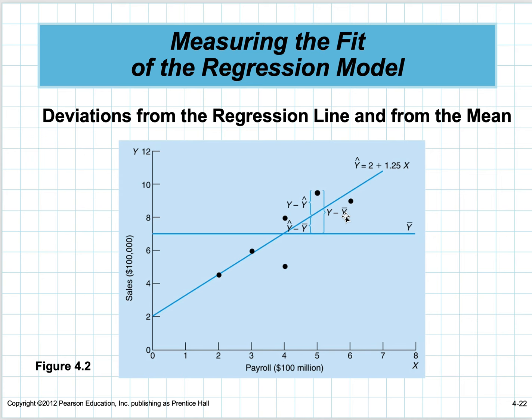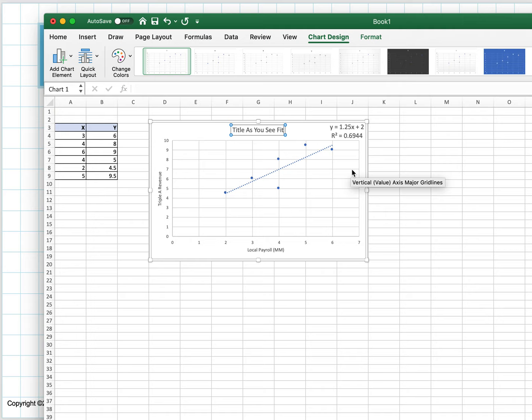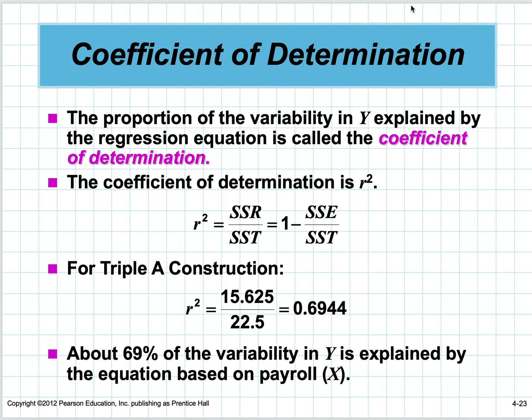We come up with a measure: it's really the ratio of the sum of squares regression to sum of squares total, which equals 1 minus the sum of squared error divided by the sum of squared total. It comes out to 0.69. About 69% of the variability in revenue for Triple A is explained by the equation based on the payroll.